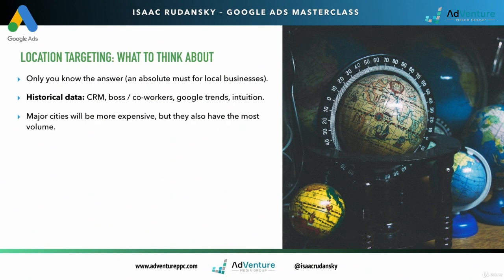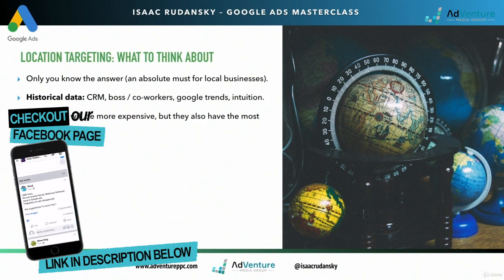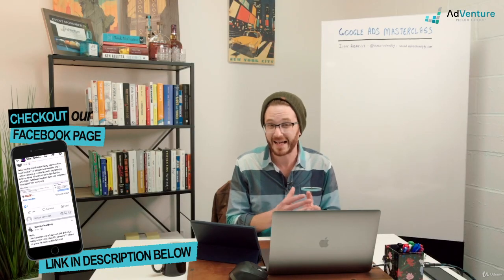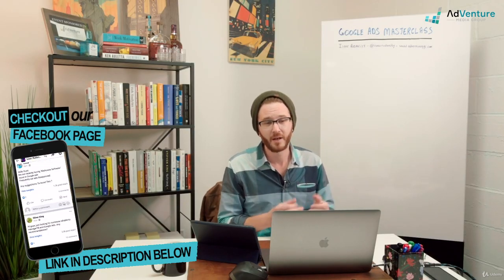Typical guidelines: major cities will be more expensive, they'll also have the most volume. That's this classic push and pull where you want to get the cheapest clicks, but the more expensive clicks will be in the areas that are more competitive. And the reason why they're more competitive is because they work better.